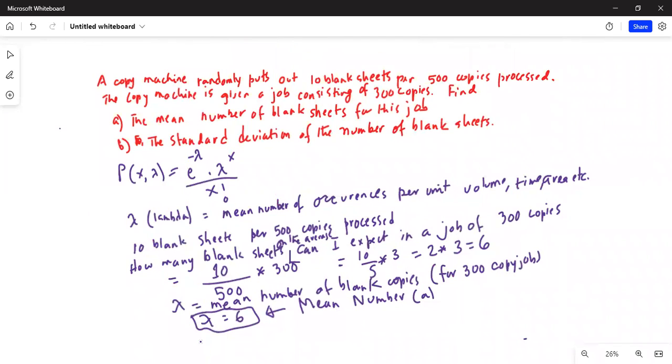Variance or standard deviation in Poisson distribution is equal to square root of lambda. So in this case it will be square root of 6.